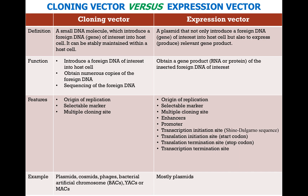I can summarize the comparison between cloning vector and expression vector in this table. A cloning vector is a small DNA molecule which introduces a foreign gene of interest into host cells. An expression vector is a plasmid that not only introduces foreign DNA, but also expresses a relevant gene product. The function of a cloning vector is to introduce foreign DNA into host cells, obtain numerous copies, and allow sequencing. The function of an expression vector is to produce a gene product — either RNA or protein — from the inserted gene. Both contain an origin of replication, selective marker, and multiple cloning site. Expression vectors additionally contain promoters, transcription initiation site, translation initiation site, translation termination site, and transcription termination site.